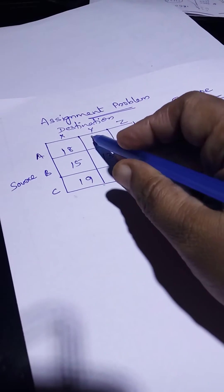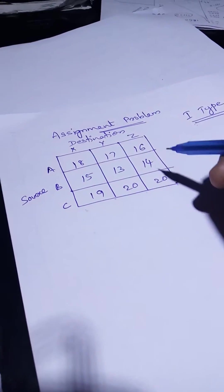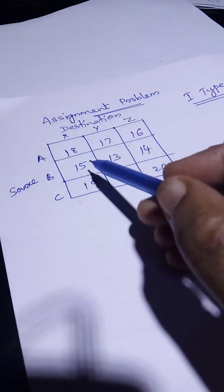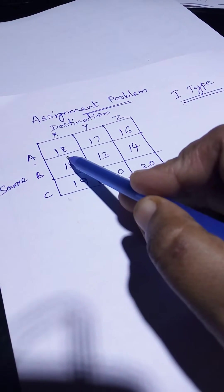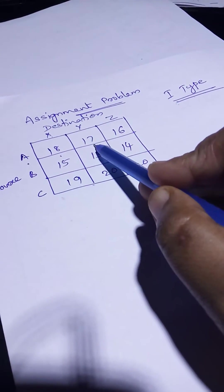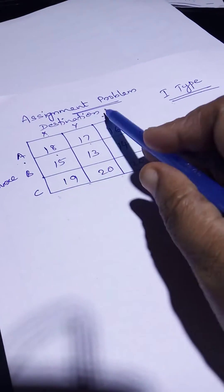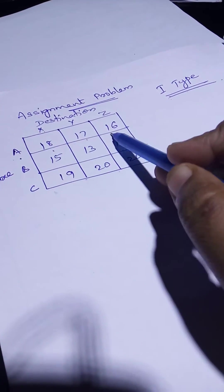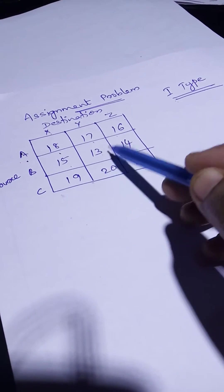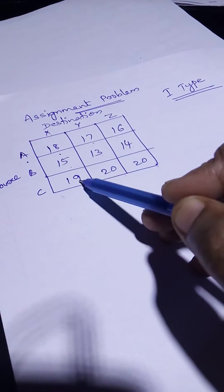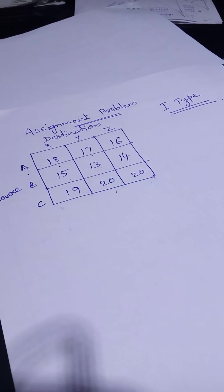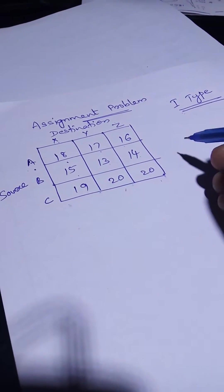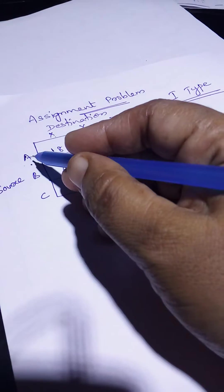XYZ is the destination. The values of the matrix are: A to X is 18, A to Y is 17, A to Z is 16, then 15, 13, 14, and 19, 20, 20. First, check whether this is balanced or not.